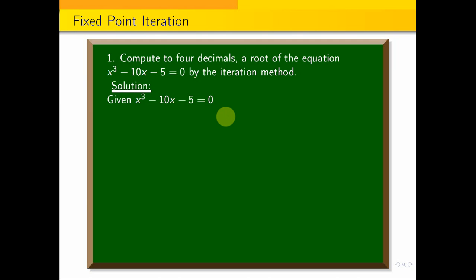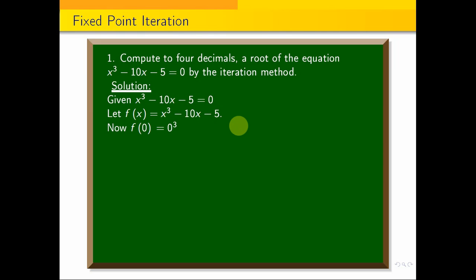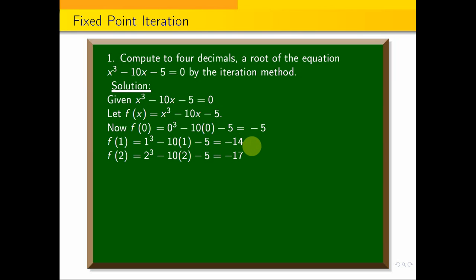The function is f(x) = x³ − 10x − 5. We have to find an interval where the root lies. Starting with f(0) = −5 (negative), f(1) = −14 (negative), f(2) = −17 (negative), f(3) = −8 (negative). We need one positive and one negative value.